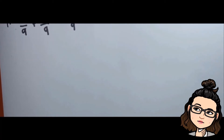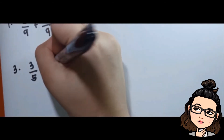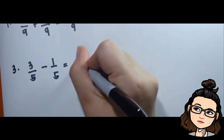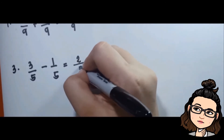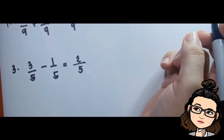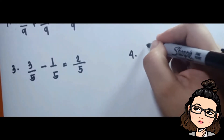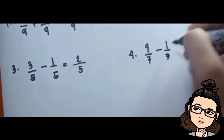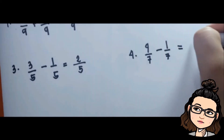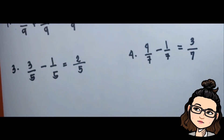Now let's do subtraction. For example: 3/5 minus 1/5. Subtract the numerators: three minus one is two, copy the denominator — the answer is 2/5. Another example: 4/7 minus 1/7. Four minus one is three, copy the denominator. No common factors, so the final answer is 3/7.